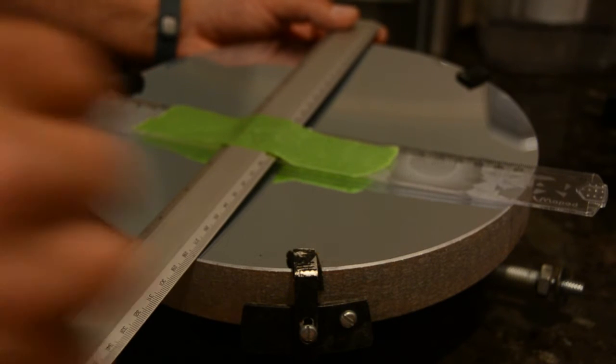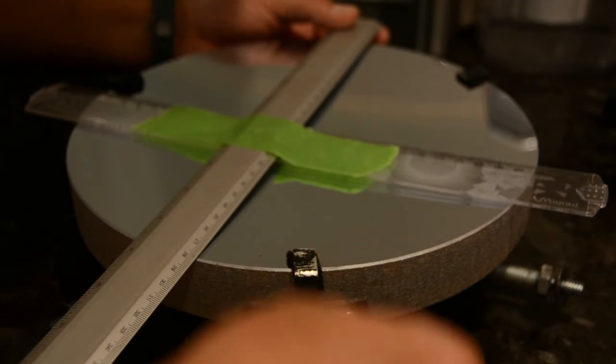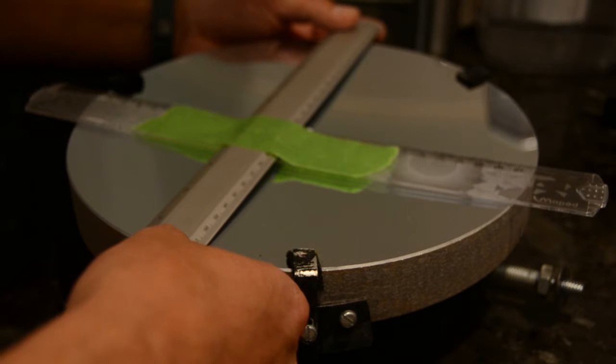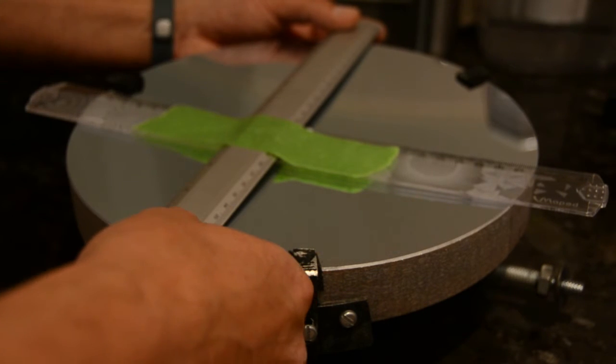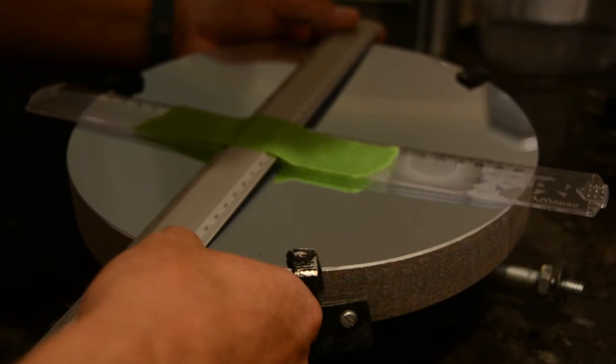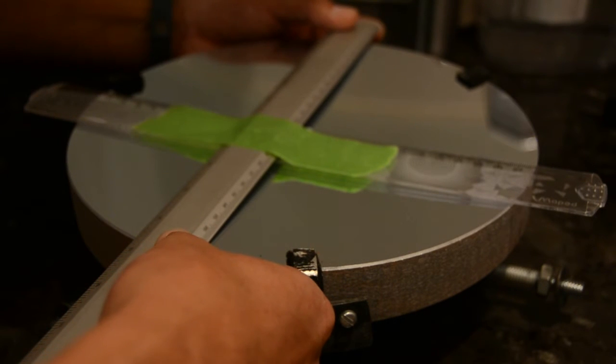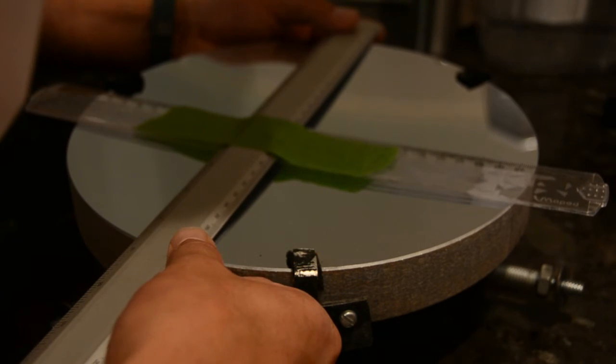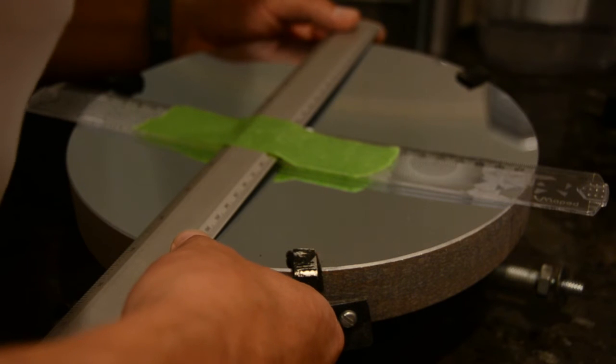So after you've fussed around a bit, line your two rulers up making sure that the edges are meeting at the same point. Which mine aren't so I have to do a little math in my head. And then you center them.